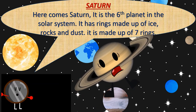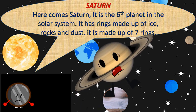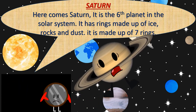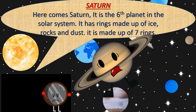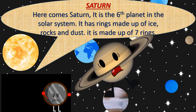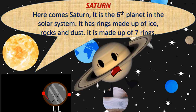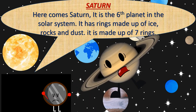Saturn. Here comes Saturn. It is the sixth planet in the solar system. It has rings made up of ice, rocks and dust. It is made up of seven rings.